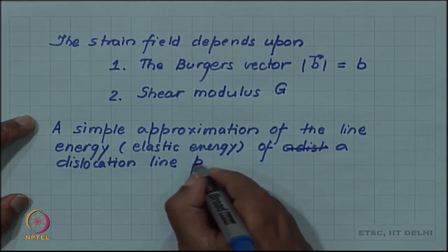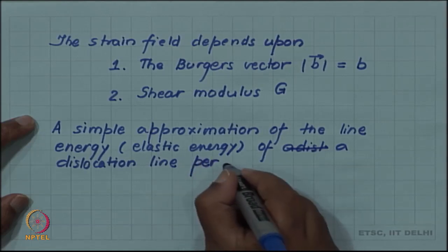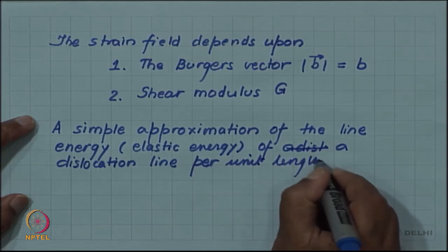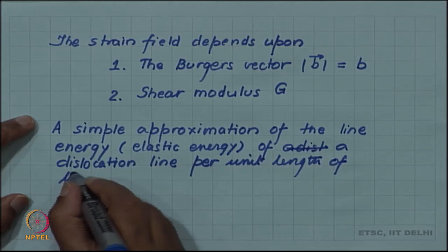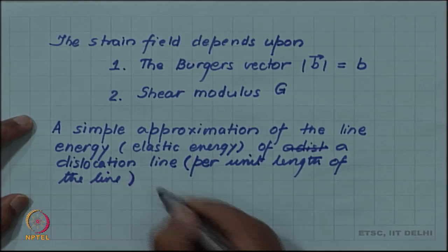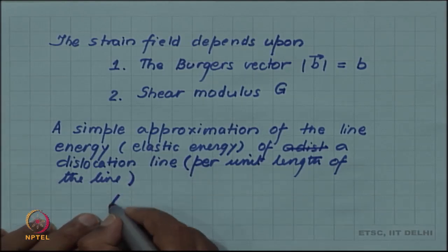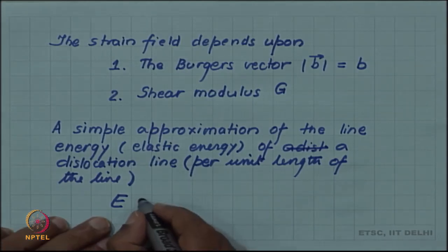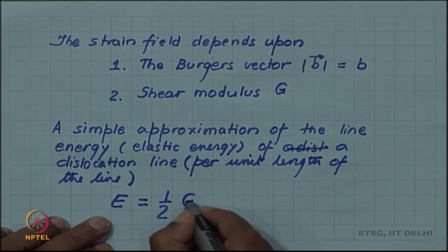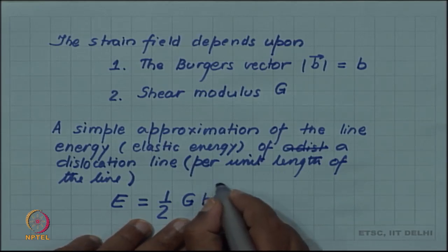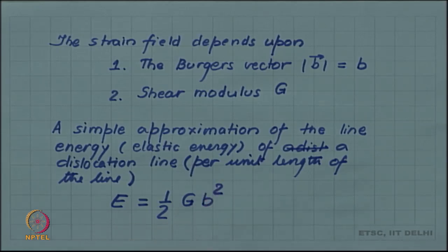Of a dislocation line per unit length of the line. If I write E as the elastic energy per unit length of the line, then this is given simply by half of the shear modulus times the square of the magnitude of the Burgers vector.